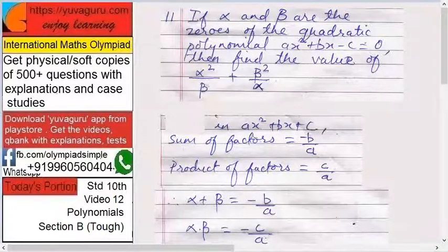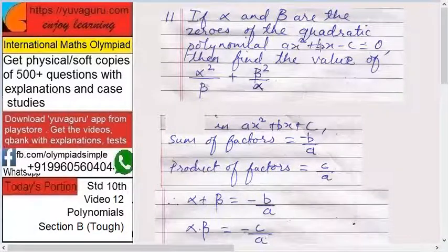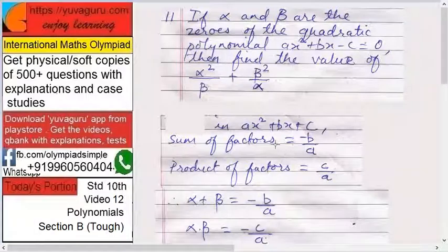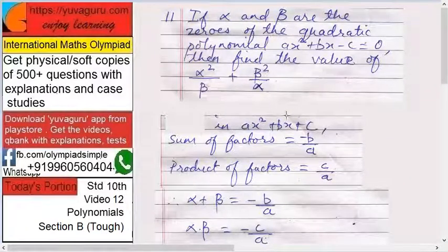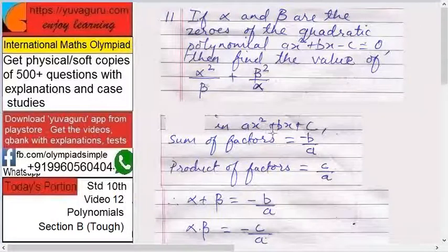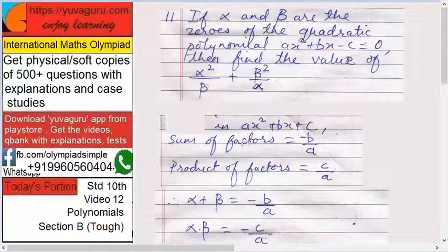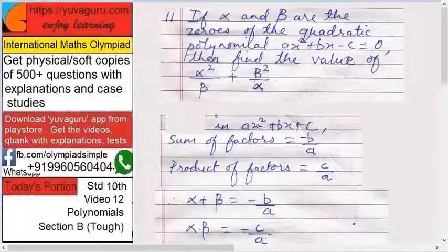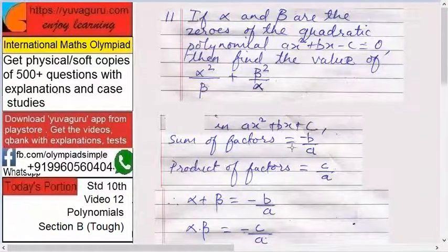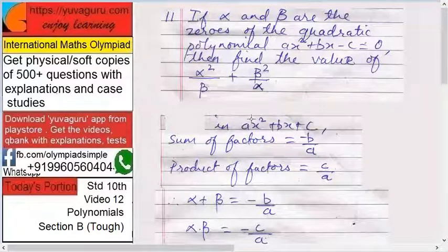The quadratic equation given is ax² + bx - c. What is the formula for any quadratic equation ax² + bx + c? The sum of the zeros is -b/a and the product of the zeros is c/a.